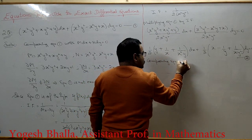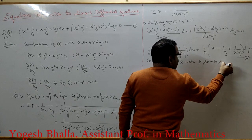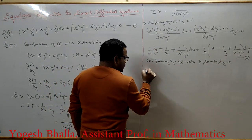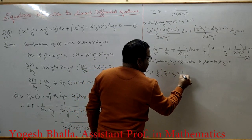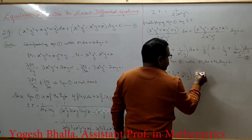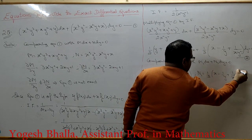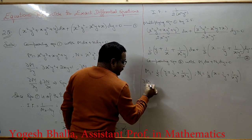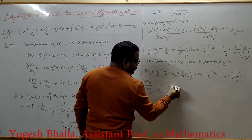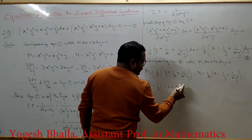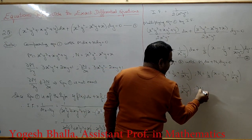Comparing equation 2 with M1 dx + N1 dy = 0: M1 = 1/(2)·y + 1/(2x) + 1/(2x²y), and N1 = 1/(2)·x − 1/(2y) + 1/(2xy²). Now computing ∂M1/∂y: the derivative of y/2 is 1/2; 1/(2x) gives 0 (constant in y); and 1/(2x²y) gives −1/(2x²y²).